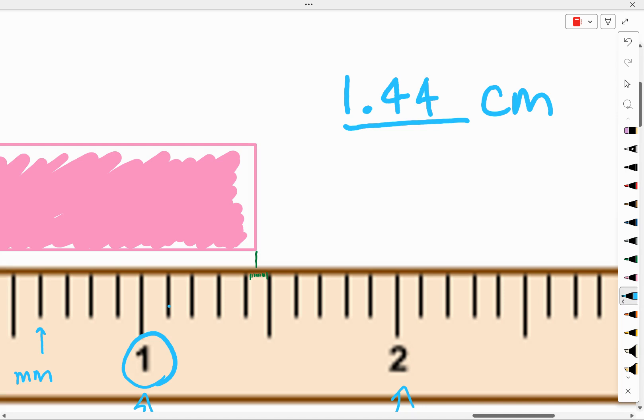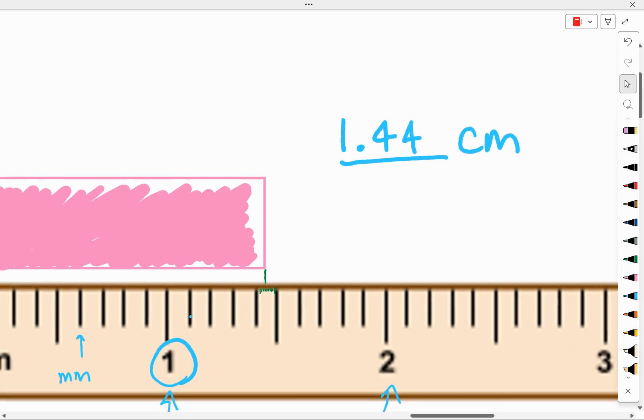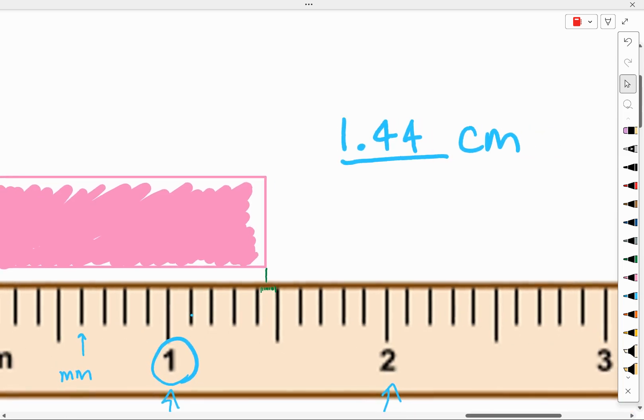Let's talk about the numbers I just wrote down. Some of those numbers I am certain of. I am certain that that pink eraser went past the one centimeter mark. So this digit here, that one, that's a certain digit.